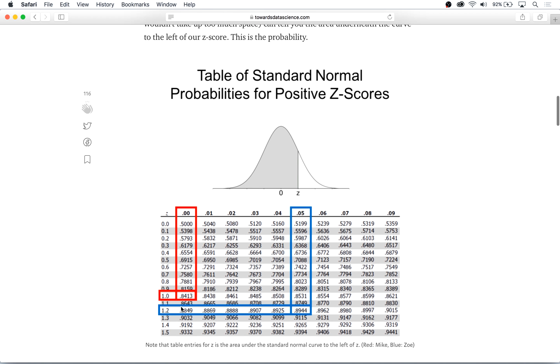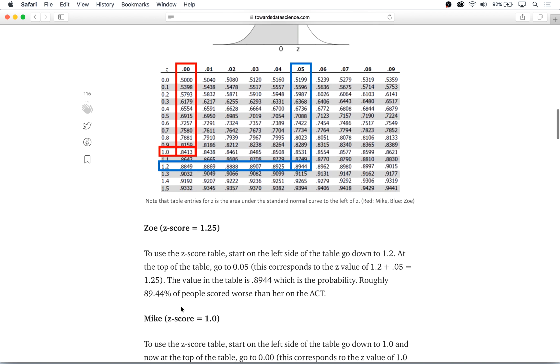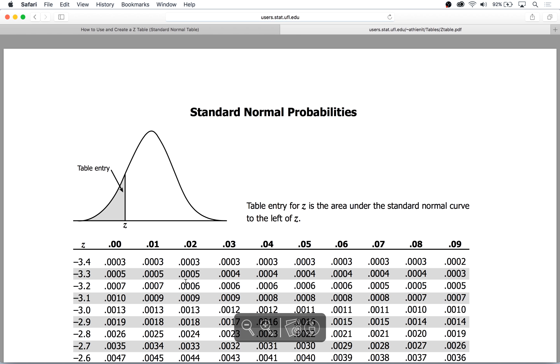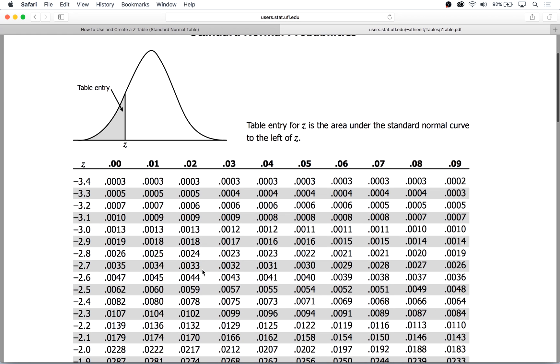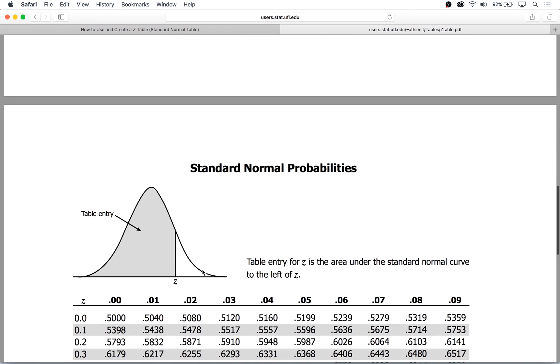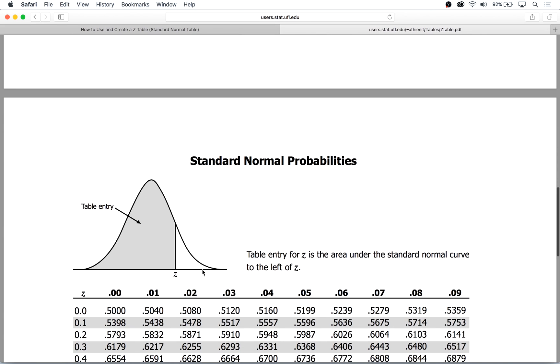So in this example it's really important to keep in mind that it's possible to have a negative z-score and if you come across that you simply use a table that contains negative z-scores and I'll leave a link to this z-table in the comments and description section below.